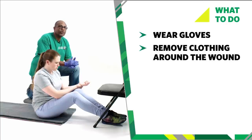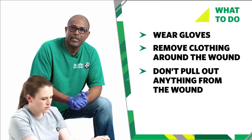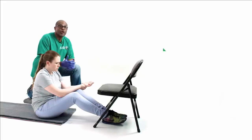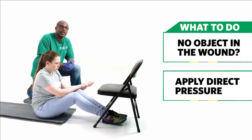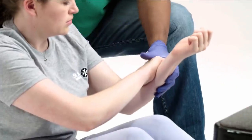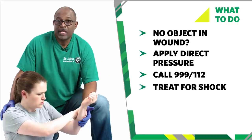If the wound is covered by clothing, remove or cut the clothes to uncover the wound. Is there an object in the wound? If there is, don't pull it out because it may be acting as a plug to reduce the bleeding — instead, leave it in and apply pressure on either side of it to push the edges together. If there is no object in the wound, apply direct pressure with your fingers and use a sterile dressing or clean, non-fluffy pad to stop the bleeding. If you don't have a dressing, ask the casualty to apply direct pressure themselves. Ask a helper to call 999 or 112 for emergency help, or if you are on your own, use a mobile or speakerphone so you can keep treating the casualty. Tell the emergency services where the bleeding is coming from and the amount of bleeding. The casualty may develop shock, so help them to lie down on a blanket or rug if there is one, to protect them from the cold.